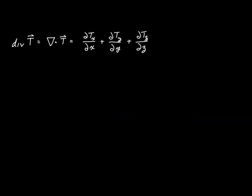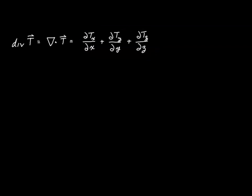Our goal for this video is to see if we can develop an appropriate expression in tensor calculus for the divergence. In keeping with the strategy we discussed before, what that really means is we want to take this expression and modify it so that it becomes a tensor equation. If we can express this as a tensor equation, we'll have an invariant expression that's valid for all coordinate systems.